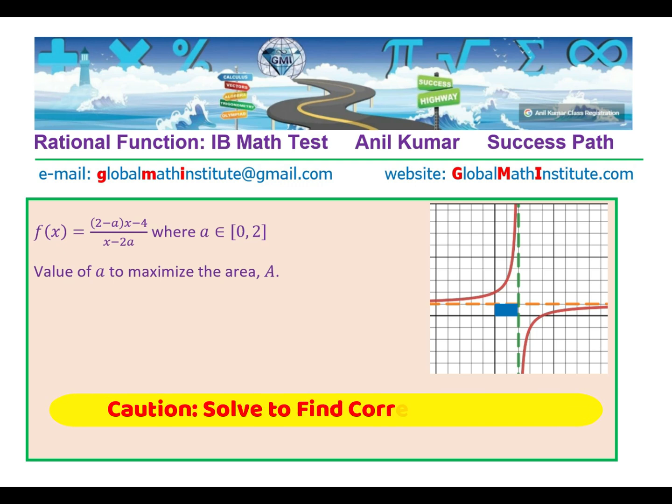It says find a value of a to maximize the area. Now, area shown in this blue rectangle has a vertex at the intersection of horizontal and vertical asymptotes. Let us really work out the horizontal and vertical asymptotes, write an equation, find the value of a systematically, and not take up from the diagram itself.